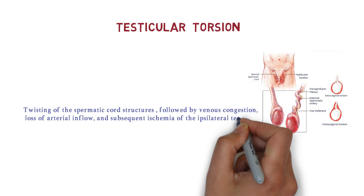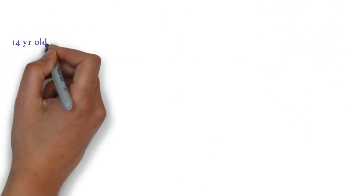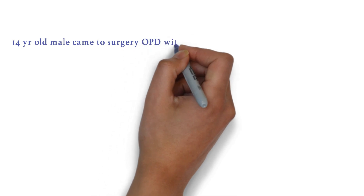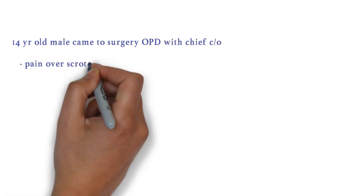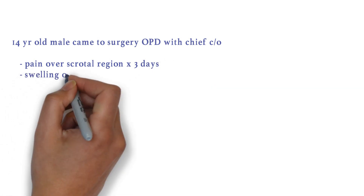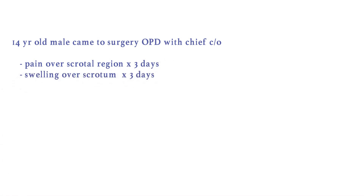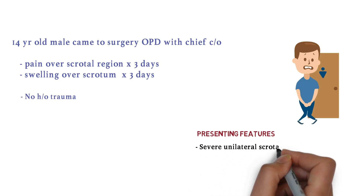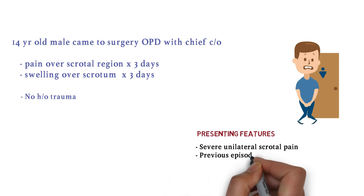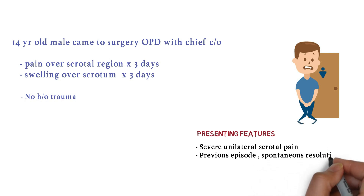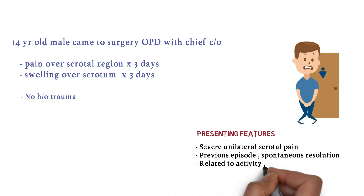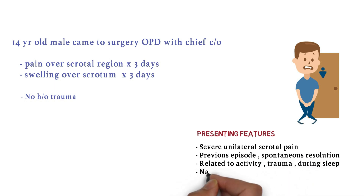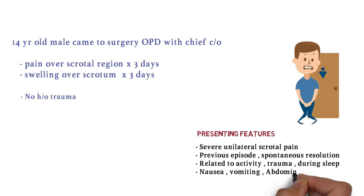A 14-year-old male came to the surgery OPD with chief complaints of pain over the scrotal region for three days and swelling over the scrotum for three days, with no history of trauma. Testicular torsion can present as severe unilateral scrotal pain, with possible previous episodes and spontaneous resolution. It may be related to activity or trauma, or occur during sleep, and can present with nausea, vomiting, abdominal pain, and fever.